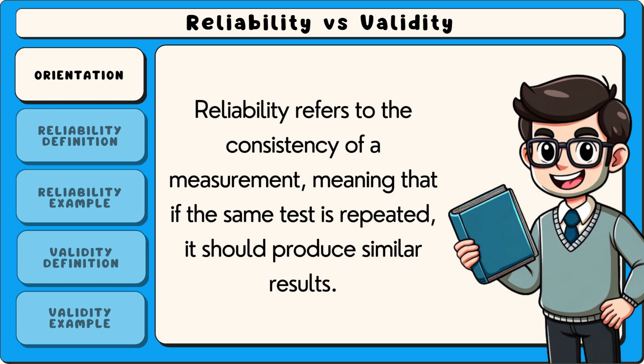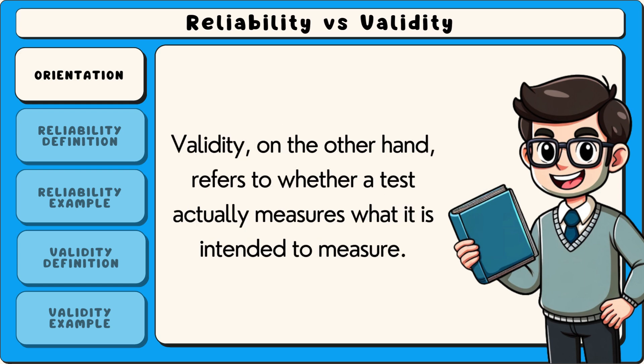Reliability refers to the consistency of a measurement, meaning that if the same test is repeated it should produce similar results. Validity, on the other hand, refers to whether a test actually measures what it is intended to measure.